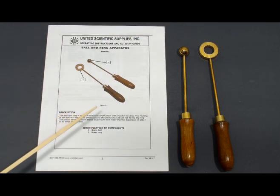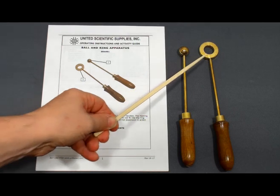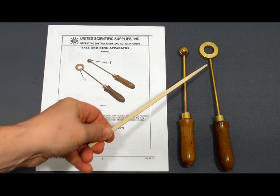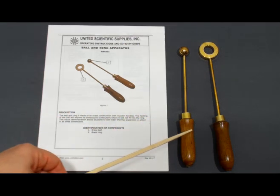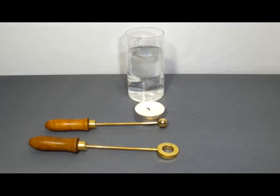It comes with an activity guide as well as a brass ball and a brass ring, and they both have wooden handles so you do not have any heat conduction to your hands.